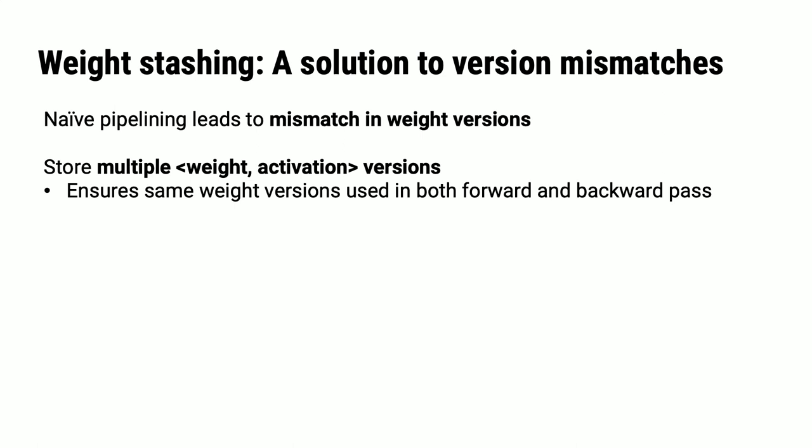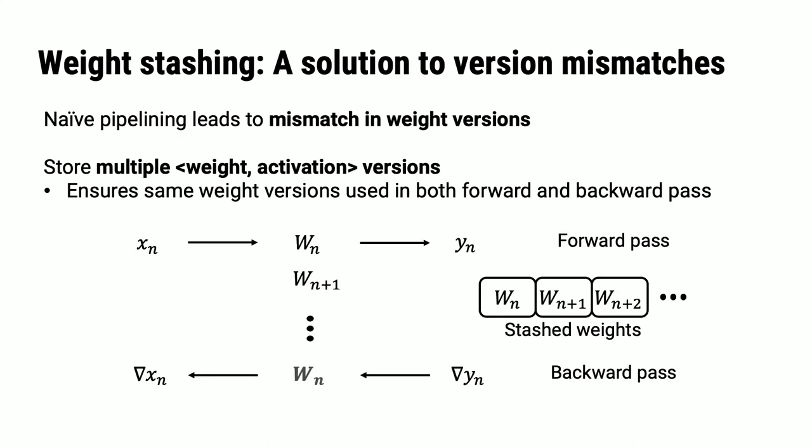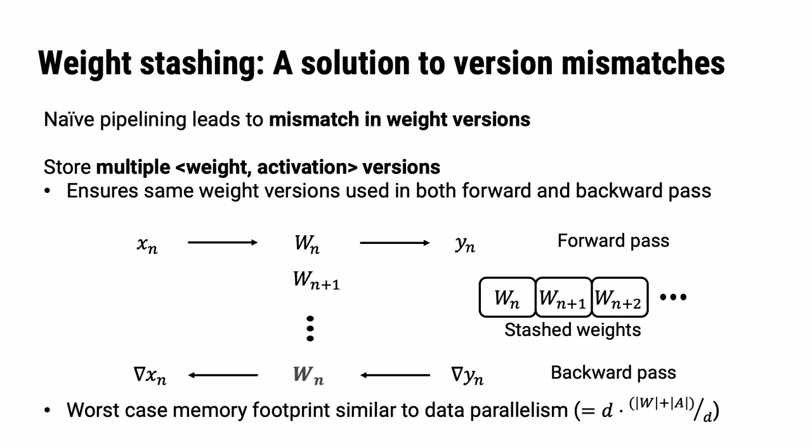To resolve this problem, we can store multiple weight and activation versions to ensure that the same weight version is used in both the forward and backward passes for any particular input. In the example from the previous slide, when we're ready to perform the backward pass for input n, we can use the same weight version w_n that we used in n's forward pass. Even though we're storing more versions of the state, since a single model is sharded across d workers, the total worst-case memory footprint is actually similar to data parallelism, since each version of the state is d times smaller.